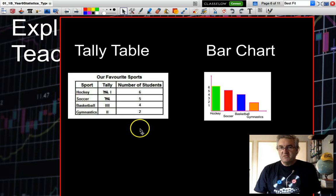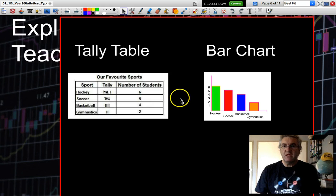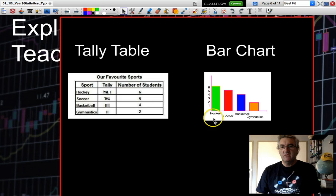Now, whilst this information is useful, it's not easy at a glance to determine which was the favorite sport. The same information has been presented in a bar chart. So quite easily, you can see that hockey was the favorite sport.